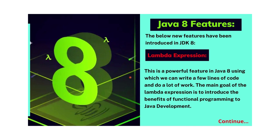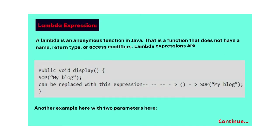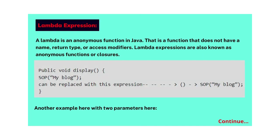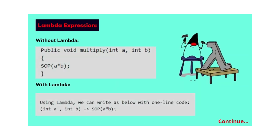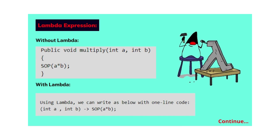Lambda Expression is a powerful feature in Java 8 using which we can write a few lines of code and do a lot of work. The main goal of Lambda Expression is to introduce the benefits of functional programming to Java development. A Lambda is an anonymous function in Java — a function that does not have a name, return type, or access modifiers. Lambda Expressions are also known as anonymous functions or closures. Below you can see an example, including another example with two parameters.